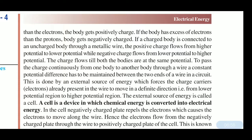To pass charge continuously from one body to another through a wire, a constant potential difference has to be maintained between the two ends of the wire in a circuit. This is done by an external source of energy which forces the charge carriers or electrons in a particular direction — from lower potential region to higher potential region.